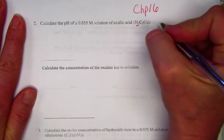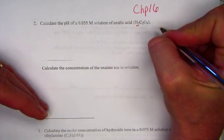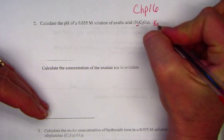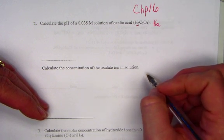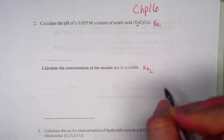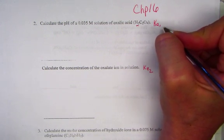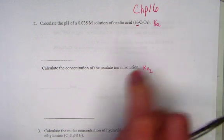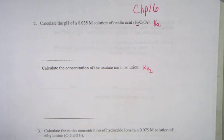And the accompanying question says calculate the concentration of the oxalate ion in solution. Knowing that polyprotic acids will ionize one step at a time, we end up needing Ka1 to find the pH and Ka2 to find the oxalate ion. The pH comes from the first ionization only, the oxalate ion will come from the second ionization.